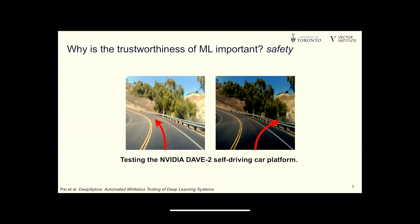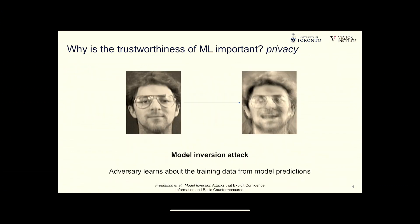Even when there are no adversaries at play, we may be concerned about safety. Researchers have demonstrated that machine learning algorithms used for self-driving applications are very sensitive to simple changes in lighting in the images they process, resulting in very drastically different actions being taken — you can see here how the algorithm would steer the wheel.